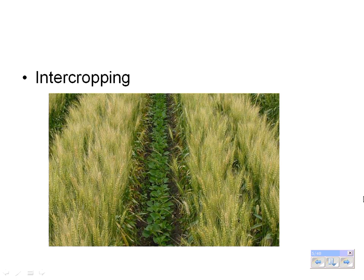Intercropping is when you grow crops side by side, alternating rows of crops. In class, we talked about intercropping corn and molasses grass. The reason is that molasses grass releases a chemical that is toxic to corn borers, which helps reduce the amount of corn borers on the corn crop and therefore reduces pesticide use.